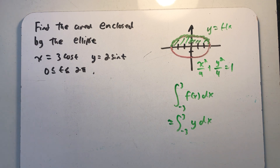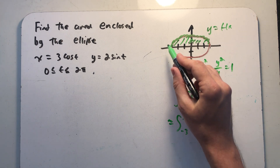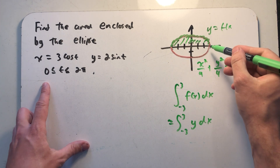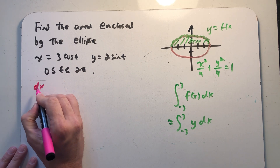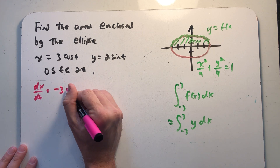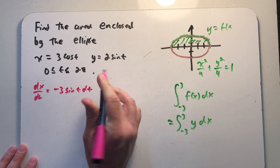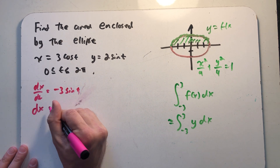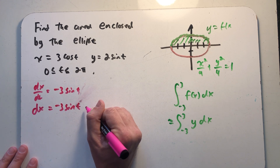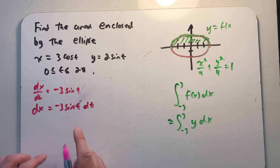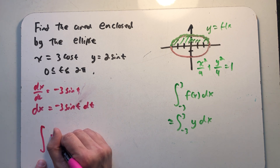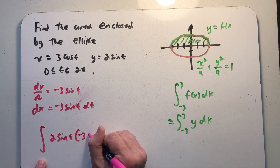We'd double that to get the area of the ellipse — that would be the integral from minus 3 to 3 of y dx. Instead, I want to think about this using the parametric equations. From minus 3 to 3 we go one direction, but t goes the other direction, as we'll see. Looking at these two equations, I know y in terms of t, and dx equals minus 3 sine t dt.